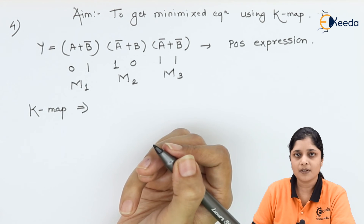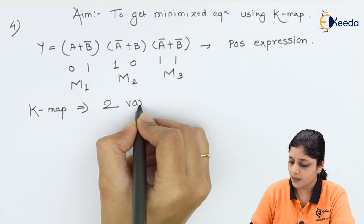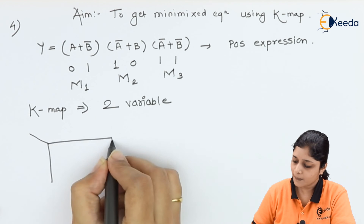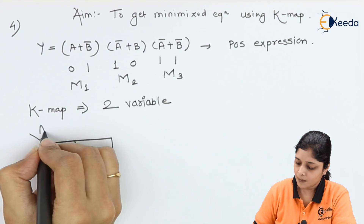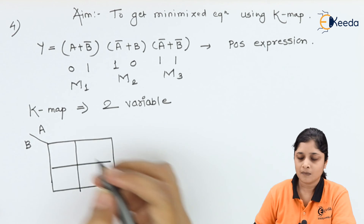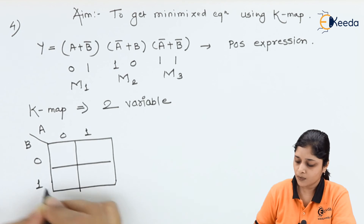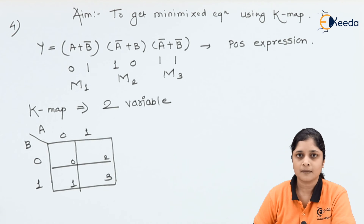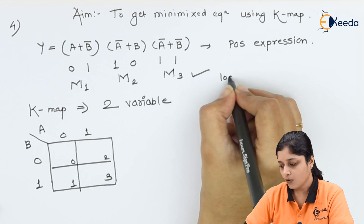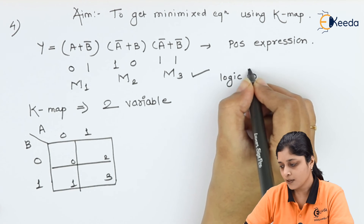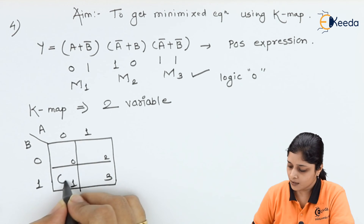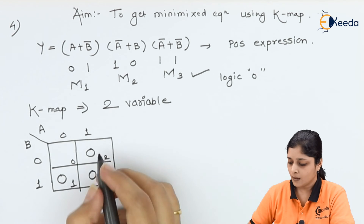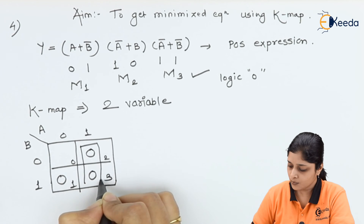We get: 01 → M1, 10 → M2, and 11 → M3. A two-variable K-map is required. Draw the K-map with variables A and B: write 0 and 1 along each axis, and 0, 1, 2, 3 inside the boxes. Place logic zero inside boxes 1, 2, and 3 for the max terms.